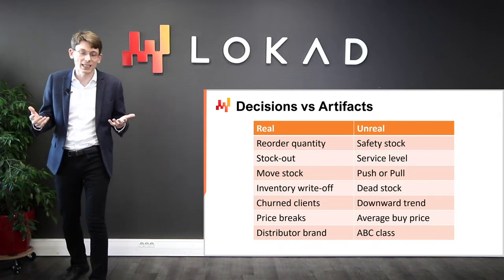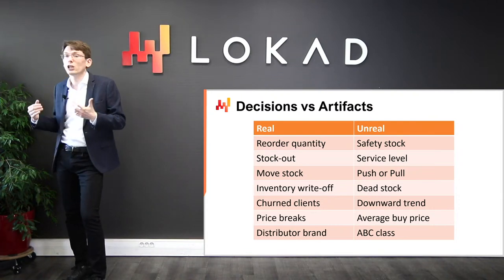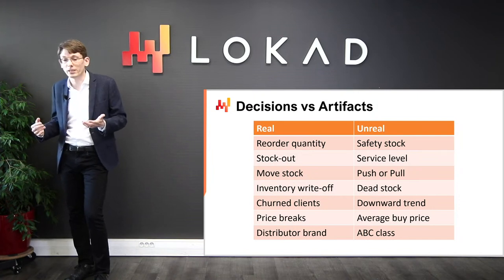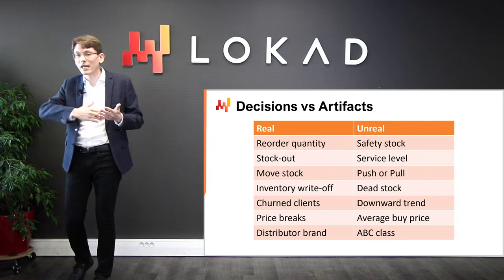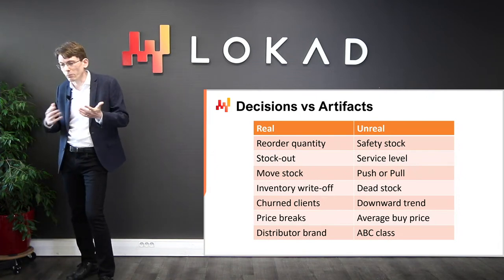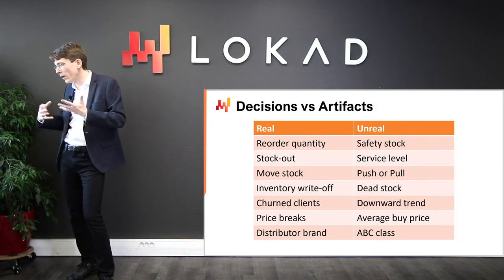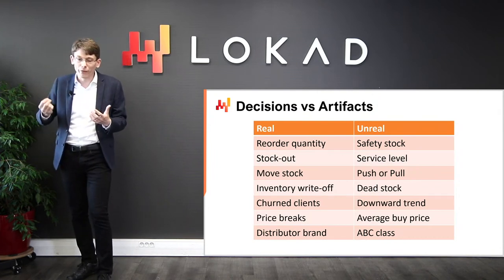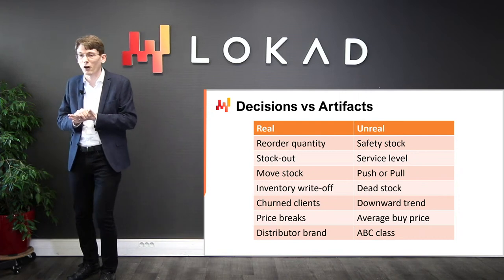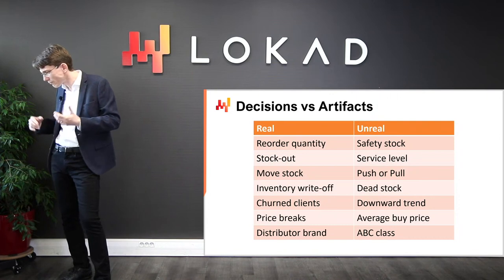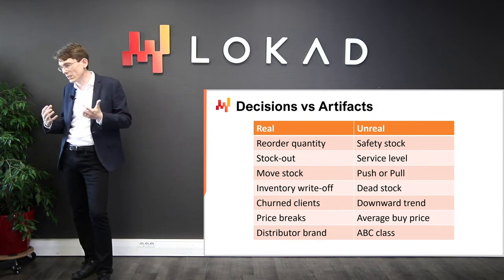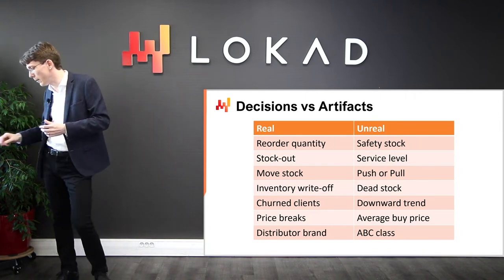Lastly, the ABC classification — ranging from top sellers to slow movers — is just a trivial, volume-driven classification of SKUs. These classes are not real attributes. Typically, half the products will change from one ABC class to the next from one quarter to the next, yet nothing really happened in the eyes of clients or the market. It is just a numerical artifact applied to the product and should not be confused with profoundly relevant attributes such as whether a product is part of your distributor brand. In this chapter, it should become increasingly clear why it is imperative to focus on supply chain decisions as opposed to wasting time and focus dealing with numerical artifacts.